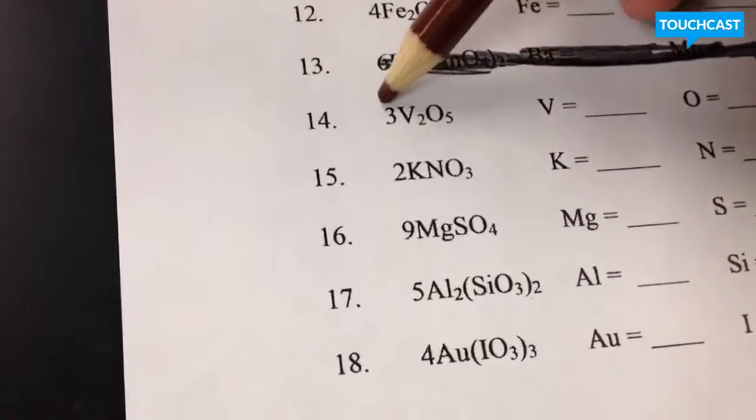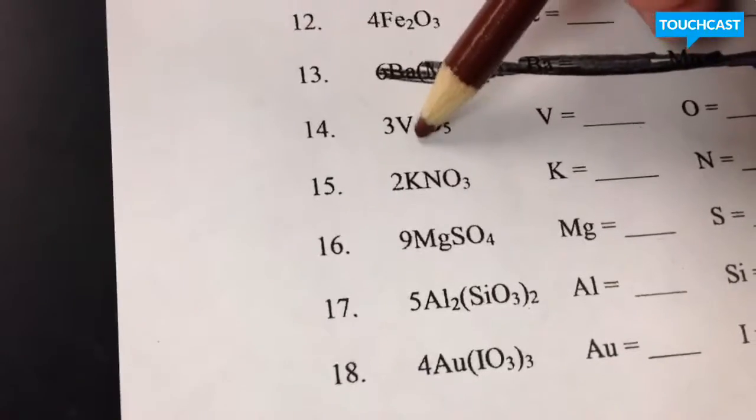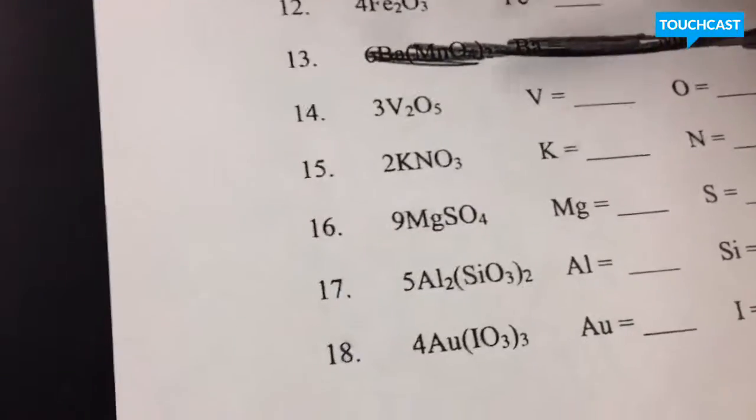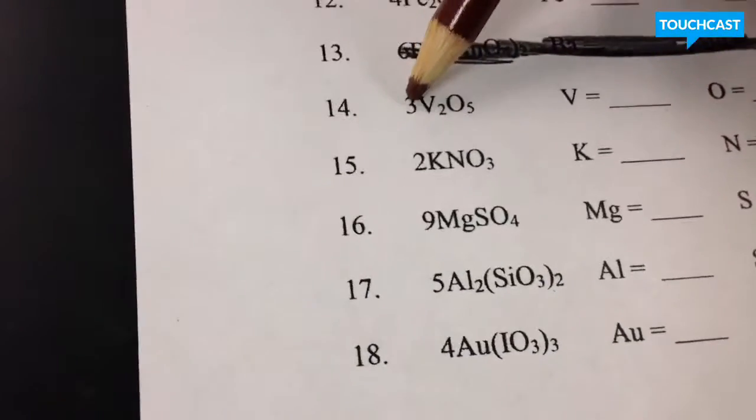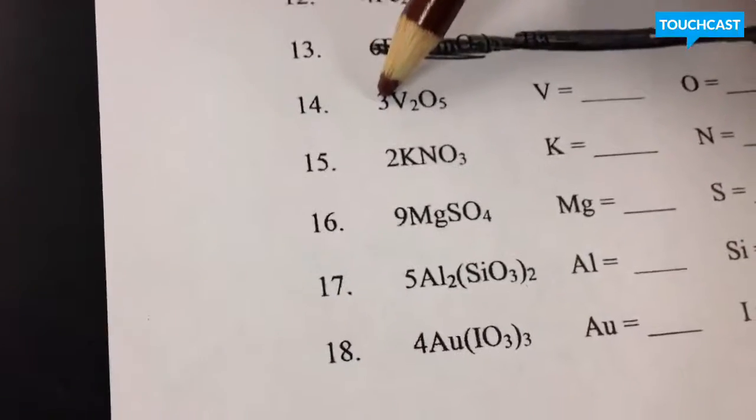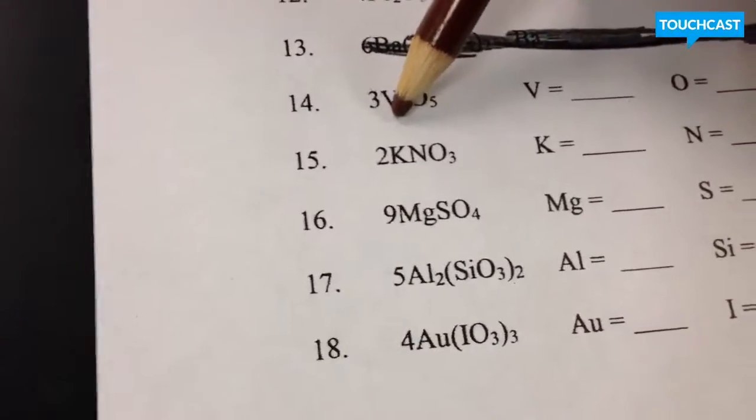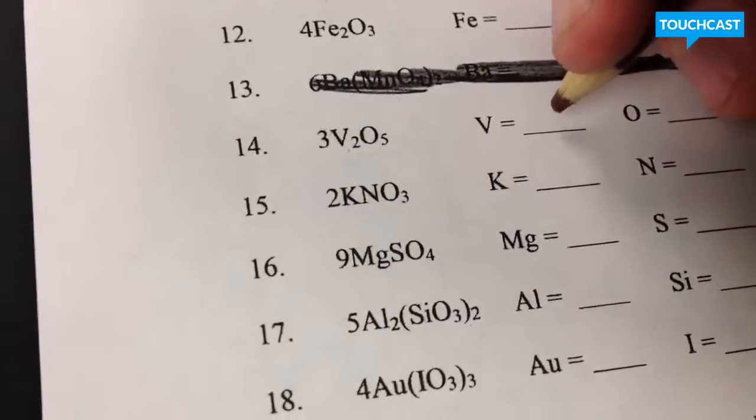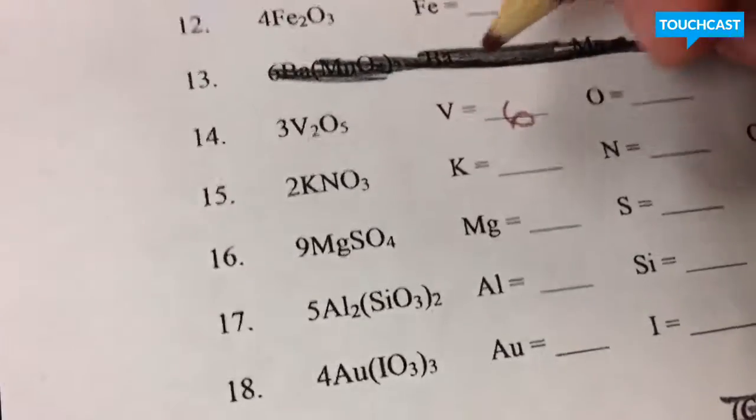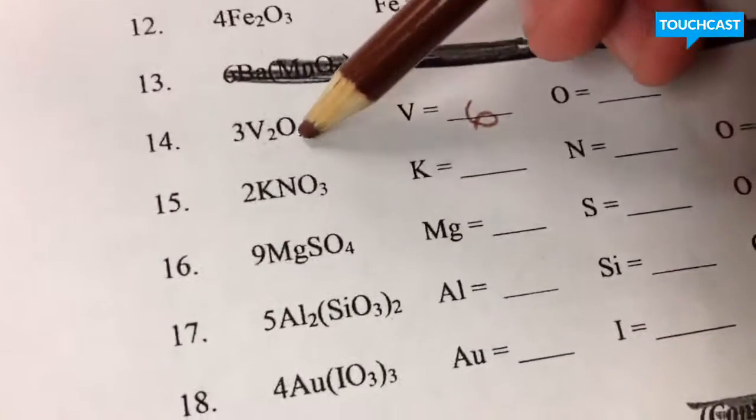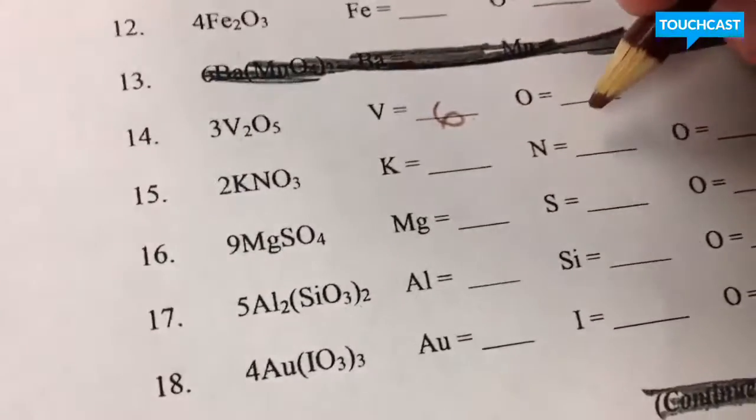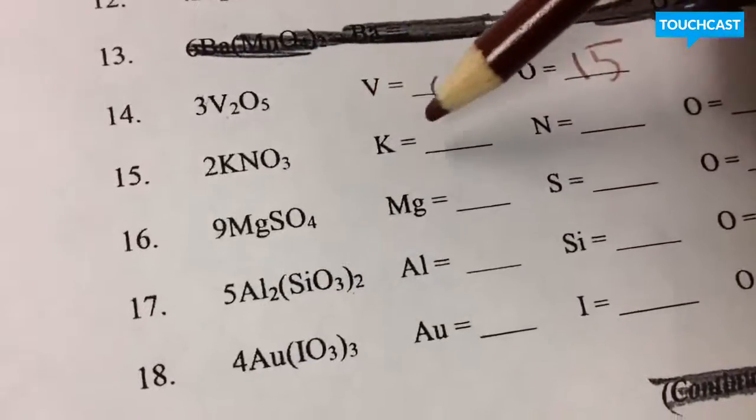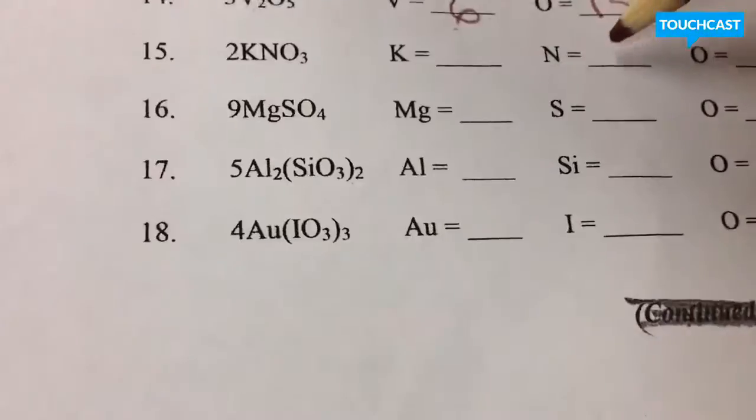So, basically, what you're going to do is multiply this by this. Because what this means is this is how many of these atoms are going to be in one molecule. The coefficient, that is how many molecules you have. So you'd have three groups of two, which is kind of the same thing as multiplication. So you'd have three times two, giving you six. And then you'd have three times five, giving you a total of 15 oxygen atoms. So you would have six of these Vs. You'd have 15 Os. And that would be the total number of atoms inside that compound.